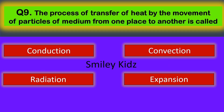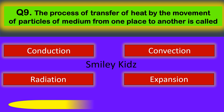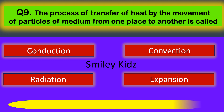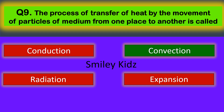Question nine: The process of transfer of heat by the movement of particles of a medium from one place to another is called — your options are conduction, convection, radiation, and expansion. The correct answer is convection. The process of transfer of heat by the movement of particles of a medium from one place to another is called convection.